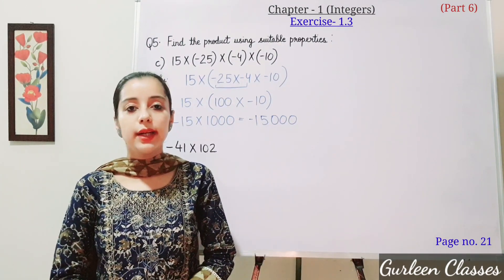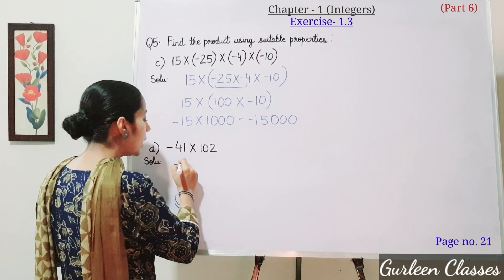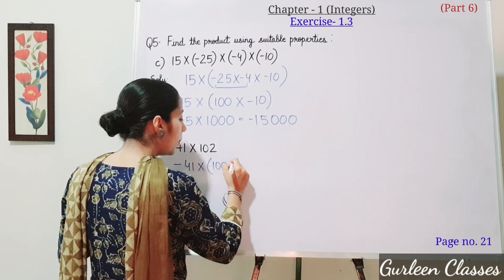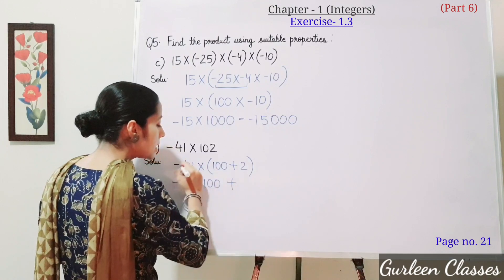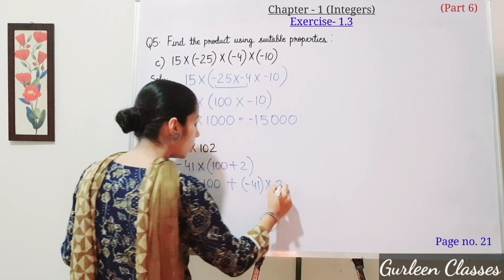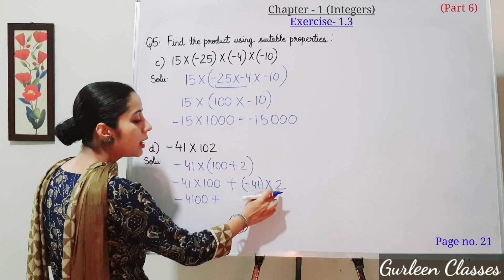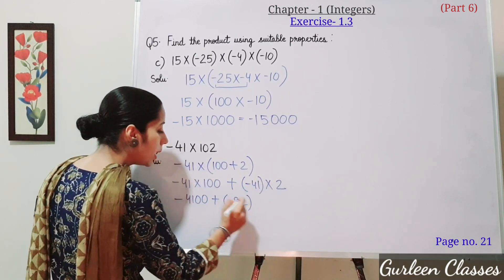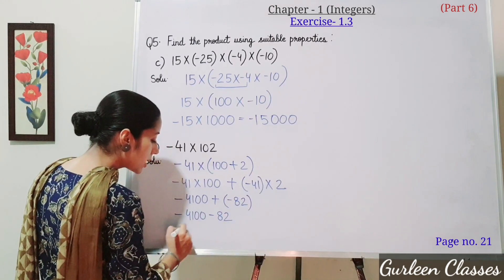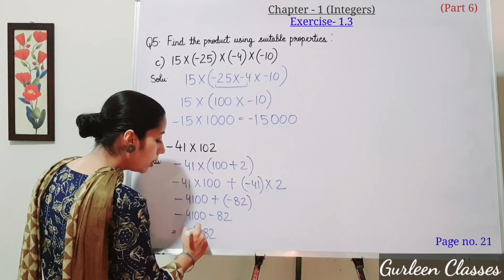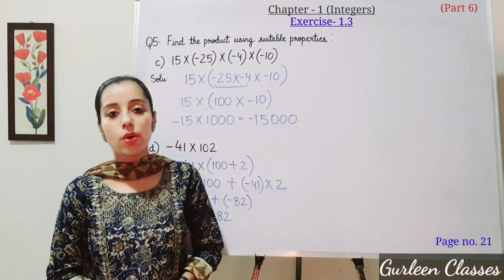Part D: minus 41 into 102. We distribute 102 as 100 plus 2. So: minus 41 into (100 plus 2) equals minus 41 into 100 plus minus 41 into 2, giving minus 4100 plus minus 82. Opening the bracket: minus 4100 minus 82 equals minus 4182.